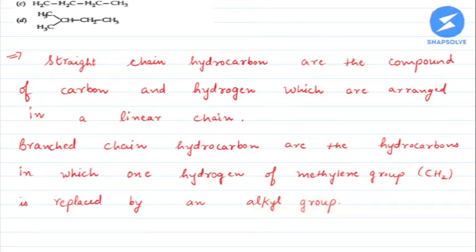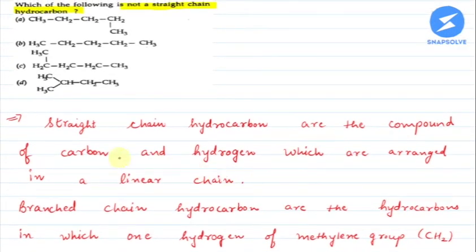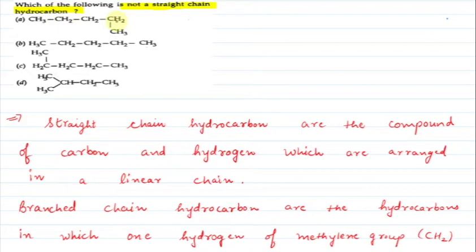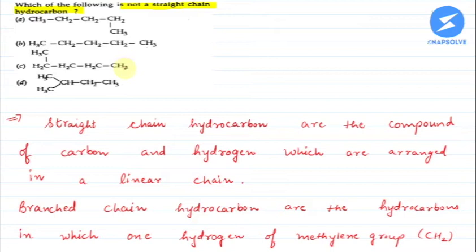So let's see the options given. Among the options, we can see that the first is CH3-CH2-CH2-CH2-CH3, which is a linear chain hydrocarbon. The second is CH3-CH2-CH2-CH2-CH3, also a linear chain hydrocarbon because it is a straight line with no branching. The third option is CH3-CH2-CH2-CH2-CH2-CH3, also no branching.